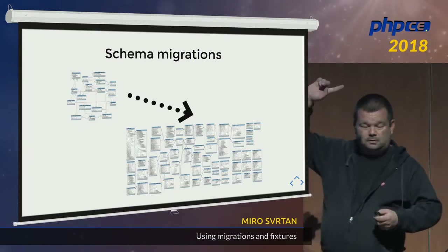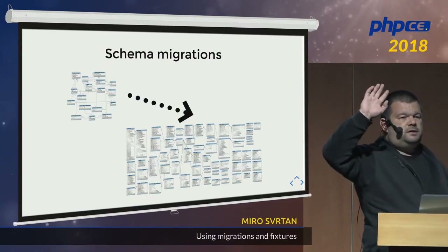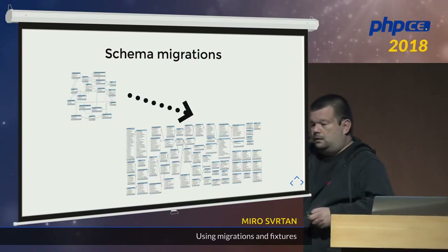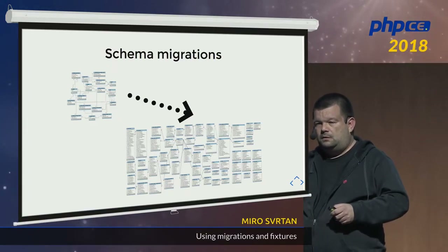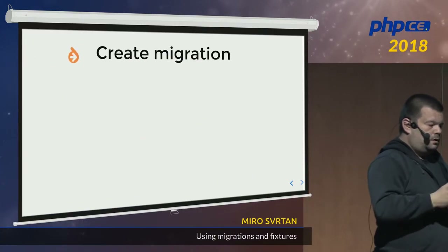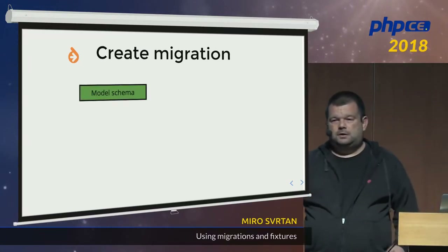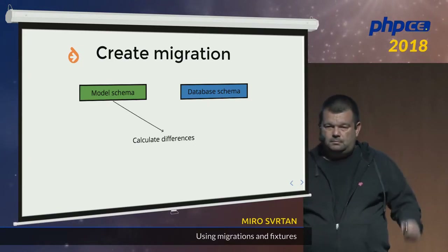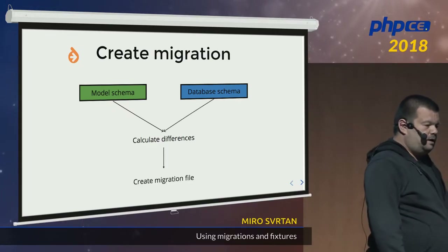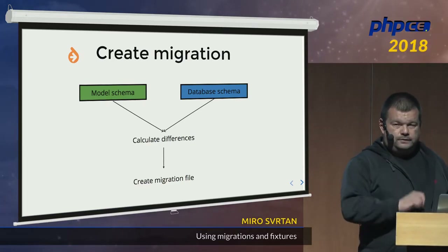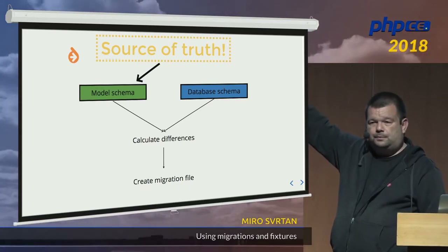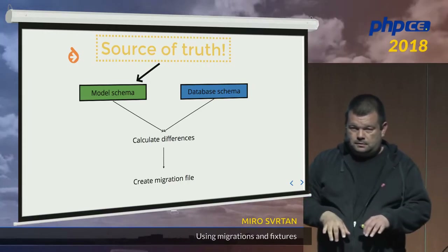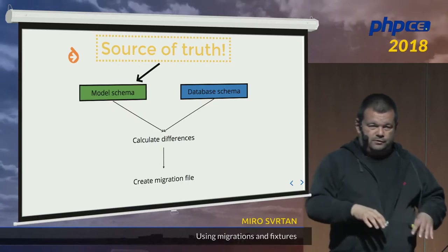Any Symfony people here? Anybody using Laravel? They have completely different approaches to migrations. Doctrine relies on the code — when you run migrate, it checks your migration files, checks your database schema, creates a diff between them, and generates the migration file. One really important thing: files are the source of truth. So if you decide to add a table by hand to your database, migration will remove it and create a migration saying 'drop that table.'